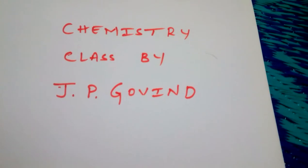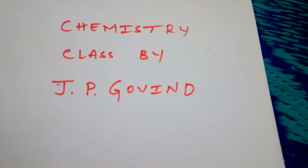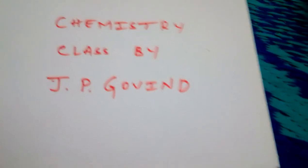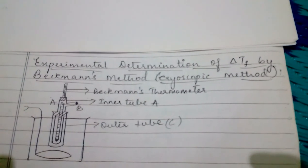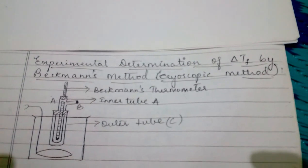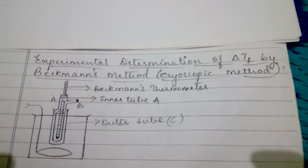Hello everyone, this is JP Gowen. Let us continue the fifth part of colligative properties — experimental determination of delta Tf by Beckmann's method, that is the cryoscopic method.